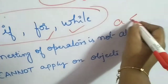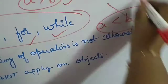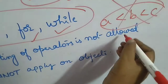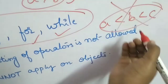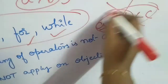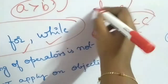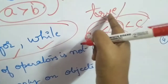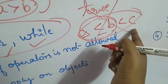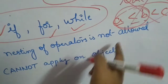I cannot say 'a is less than b is less than c' — this is not allowed. I cannot nest it. The reason nesting is not allowed is simple logic: 'a is less than b' will be either true or false. This will be evaluated to true or false, and I cannot say 'true is less than c' — there is no meaning to that. So that's the reason nesting of operators is not allowed.